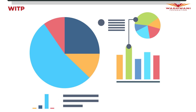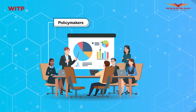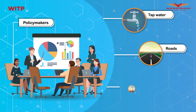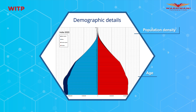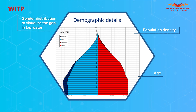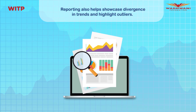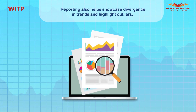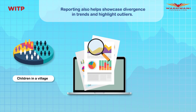Dashboards help with data-driven decision making and may be used by policymakers to get insights on current infrastructure such as tap water, roads, electricity connections, and demographic details like population density, age, and gender distribution — to visualize the gap in tap water, roads, etc., and decide suitable areas for infrastructure spending. Reporting also helps showcase divergence in trends and highlights outliers.